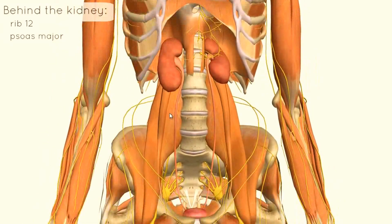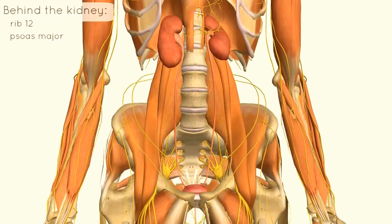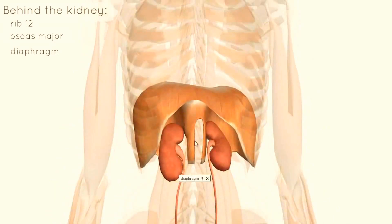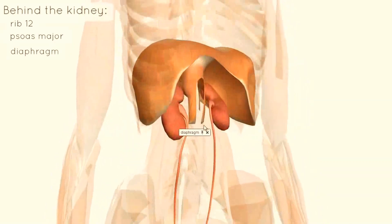The psoas major sits on either side behind the kidney. You've also got the diaphragm — the posterior parts of the diaphragm — sitting behind the kidney.